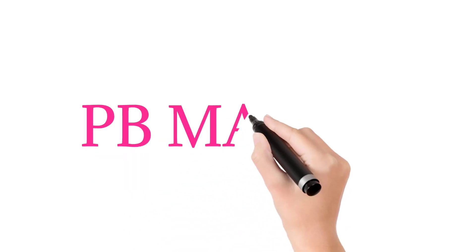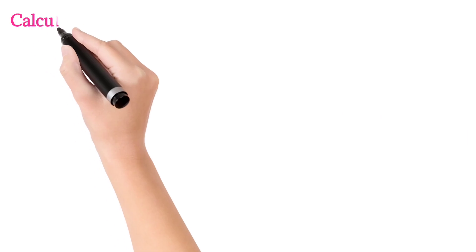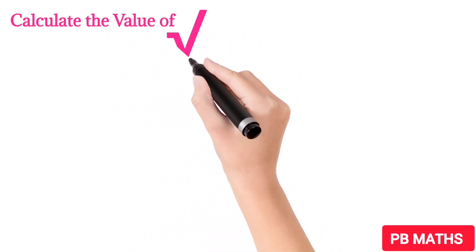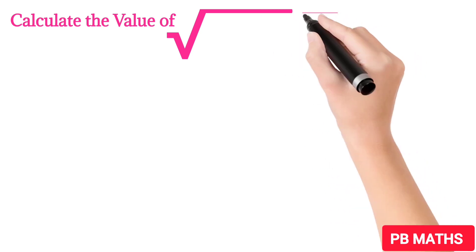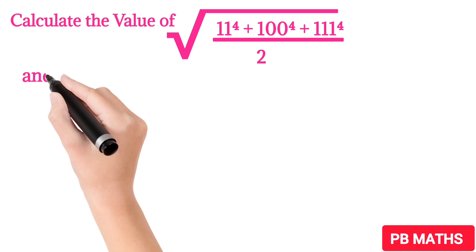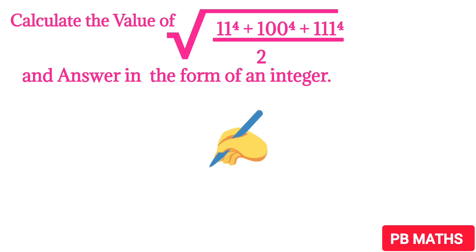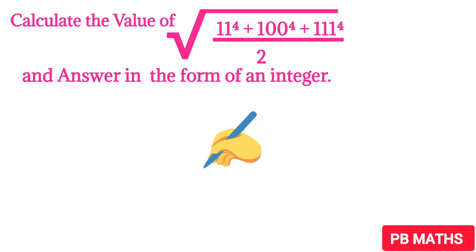Hello everyone, welcome to PB Maths. Calculate the value of the square root of 11 to the power 4 plus 100 to the power 4 plus 111 to the power 4, whole divided by 2, and answer in the form of an integer. This question is from the 2016 Japanese Maths Olympiad. If you are interested to solve this problem, you can pause this video now and try to solve. Otherwise, let's begin to solve this problem.